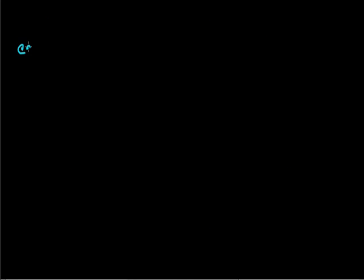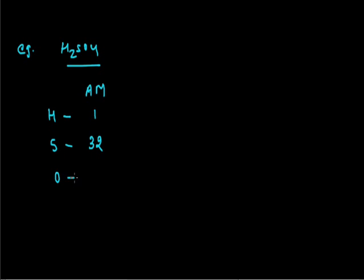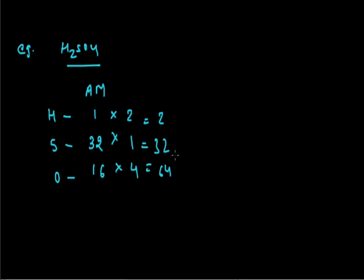For H₂SO₄: hydrogen has atomic mass 1, sulfur has atomic mass 32, and oxygen has atomic mass 16. There are 2 hydrogen atoms (2 × 1 = 2), 1 sulfur atom (1 × 32 = 32), and 4 oxygen atoms (4 × 16 = 64). Total molecular mass of H₂SO₄ = 2 + 32 + 64 = 98. Likewise, we can find the molecular mass of any molecular compound.